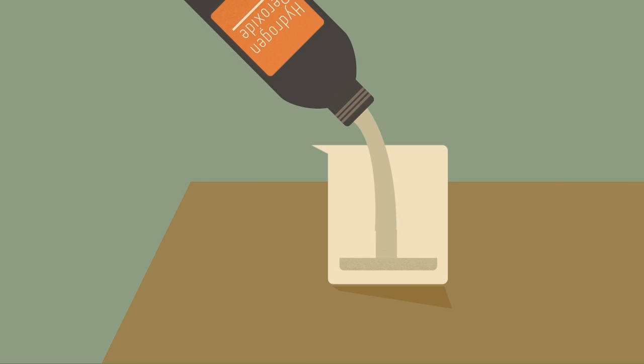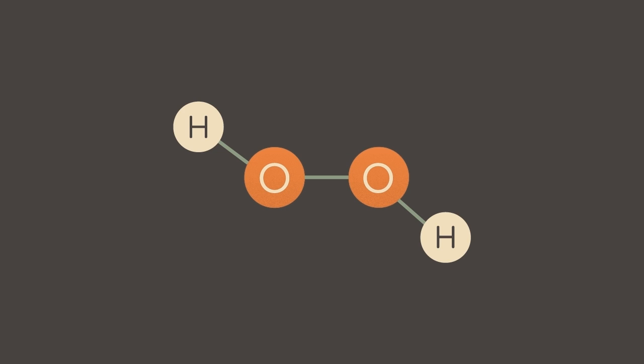This is because in the presence of warm conditions and UV light, hydrogen peroxide can decompose into water and oxygen, because the oxygen-oxygen bond in the molecule is unstable.